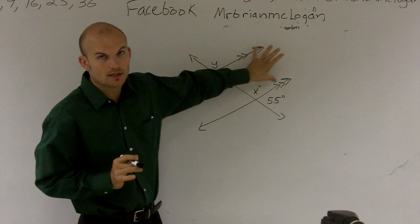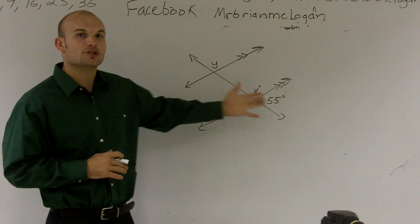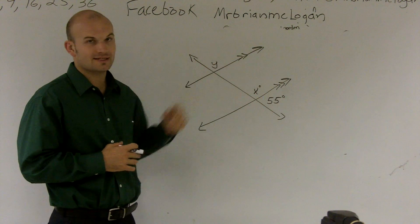is that first we have a set of parallel lines. These are lines that are never going to intersect. And then also we have a line that we call the transversal, which is intersecting these two lines.